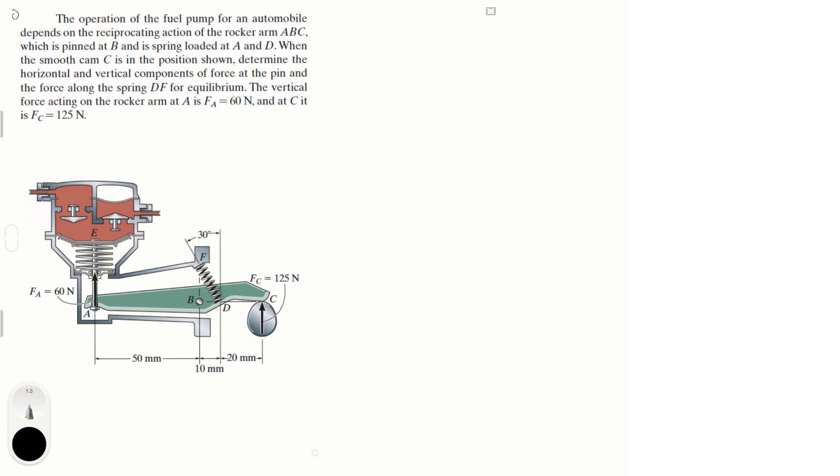determine the horizontal and vertical components of force at the pin and the force along the spring DF for equilibrium. The vertical force acting on the rocker arm at A is F_A equal to 60 newtons and C is F_C at 125 newtons.